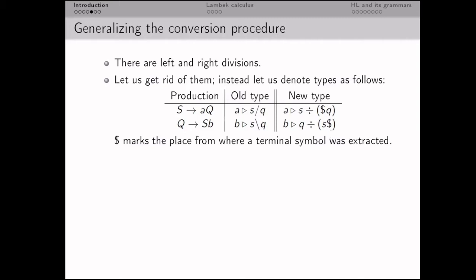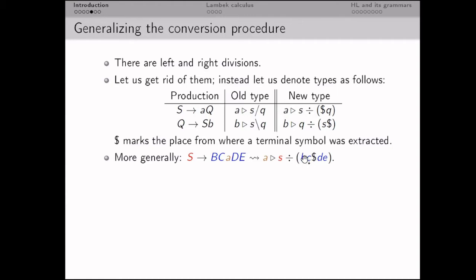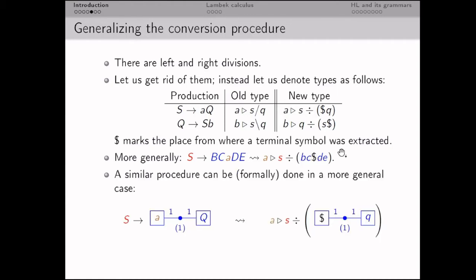For now this is completely formal and symbolic. This procedure can be done in more general cases. For instance, if we have a production with exactly one terminal symbol in the right-hand side, we extract it and say A corresponds to S divided by (B, C, dollar, D, E). We can do this even in more general cases — for instance, if we have a hypergraph production that also has exactly one terminal label in the right-hand side.